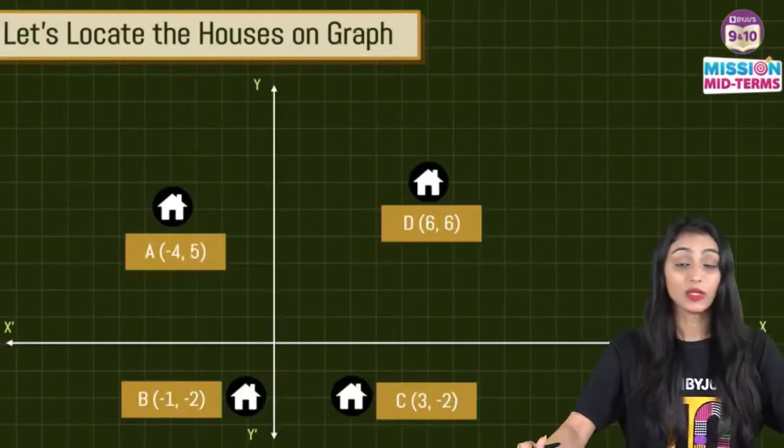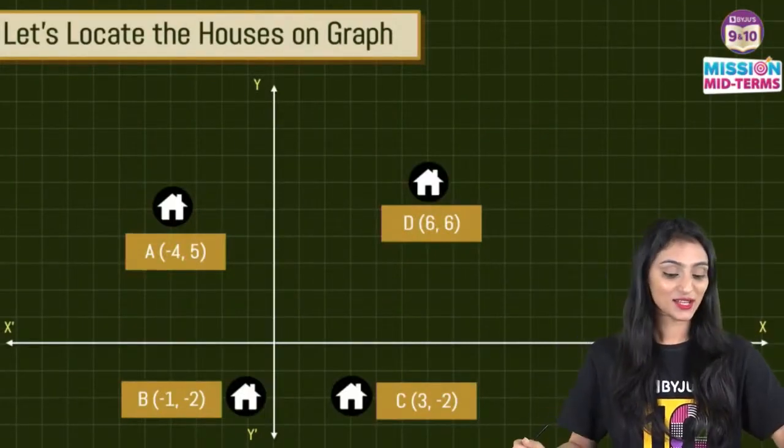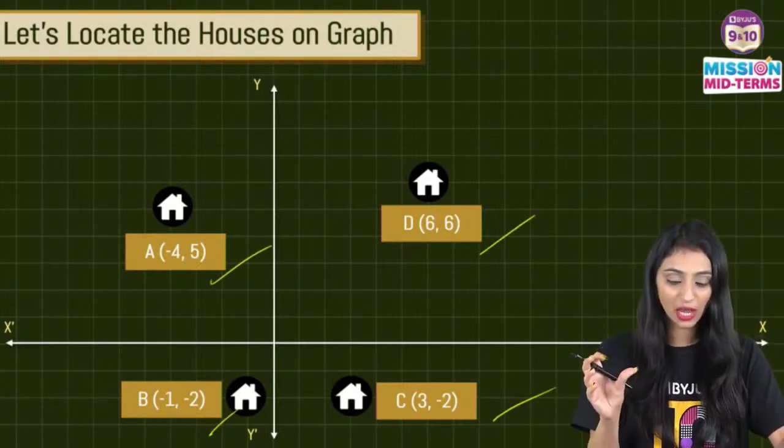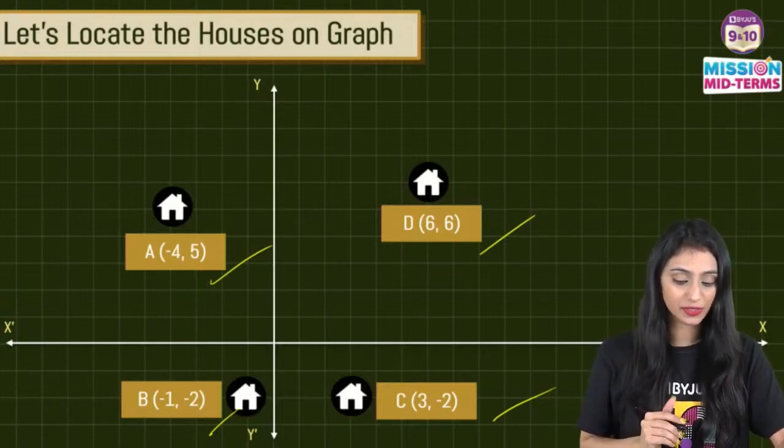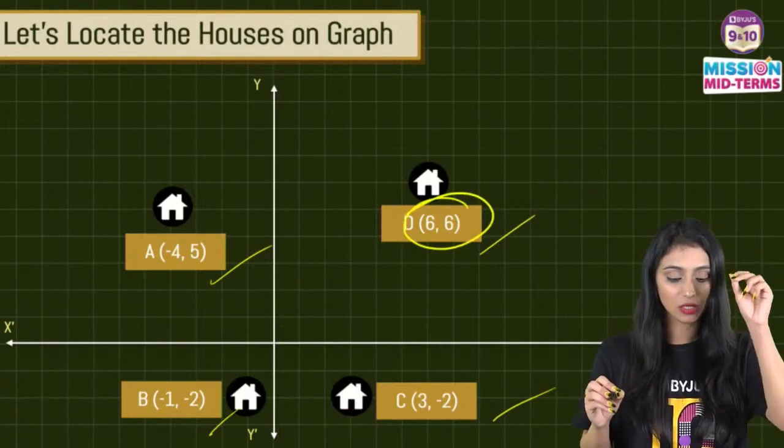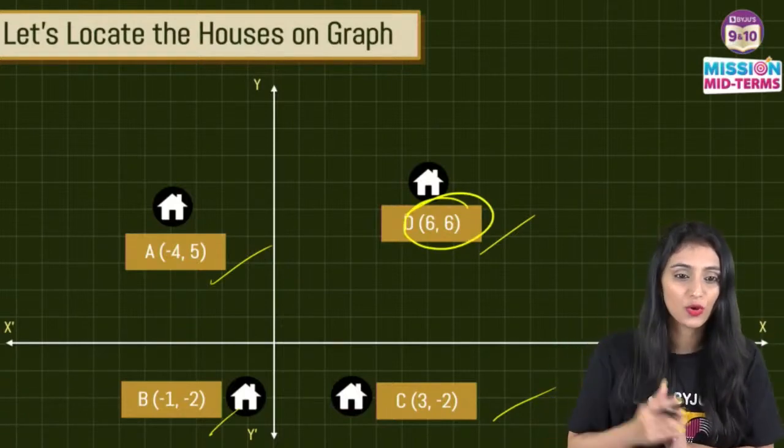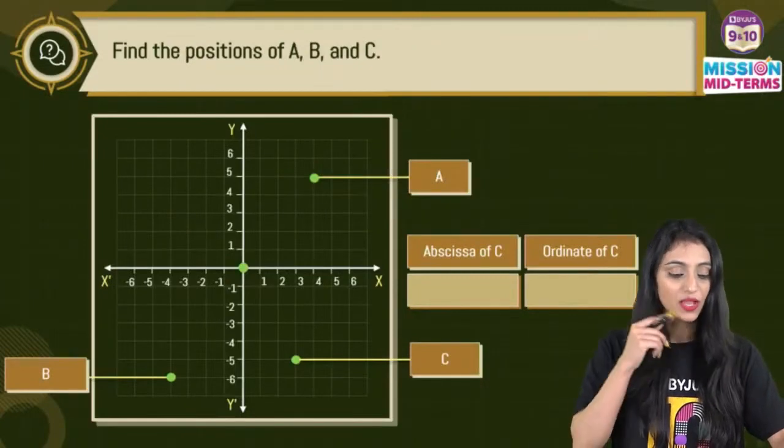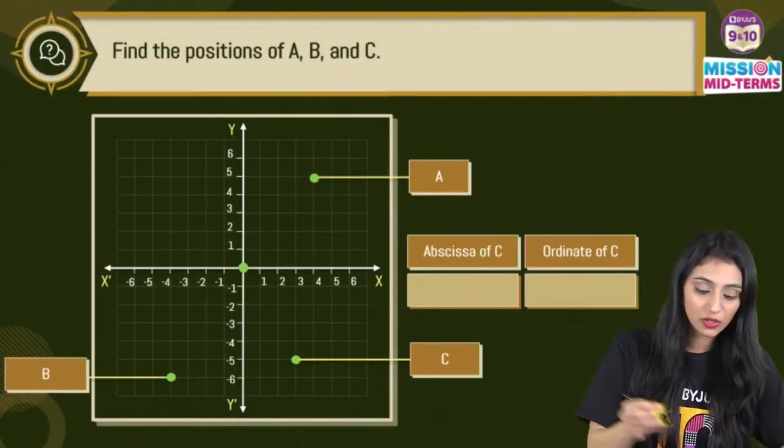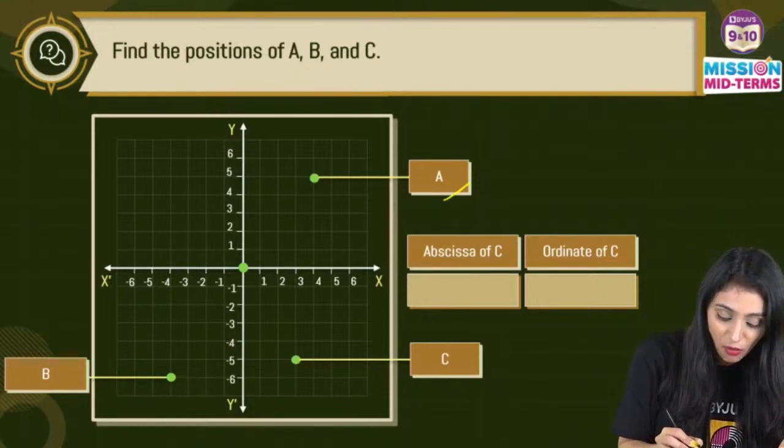All right, let's move ahead. Now let's locate the houses on graph, right? That's what we were doing. So this is what, here we can see these are the four coordinates, I mean four positions of the houses. If you carefully observe this, this is what, here we are representing six comma six. That's the location. I'll tell you what does this mean, six comma six. Let's suppose if I ask you here, find out the positions of A, B, and C. What will you say here?